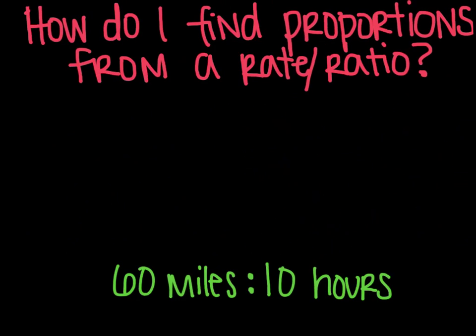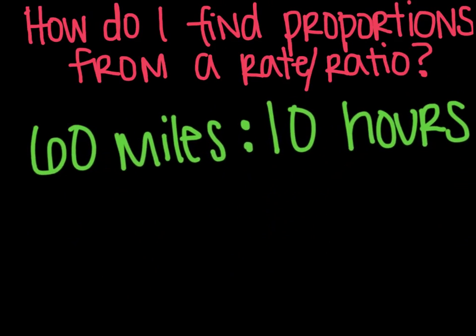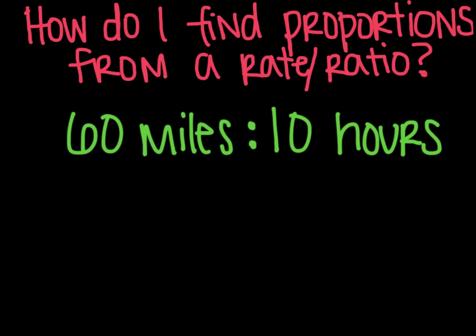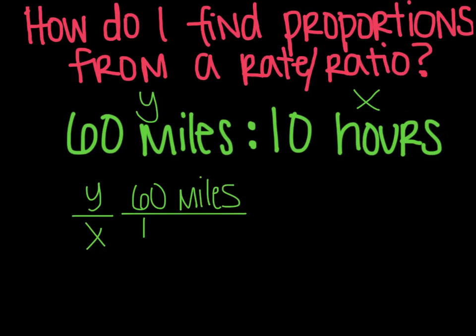The next question is, how can I find proportions from a rate or a ratio? Here's your example. You have 60 miles to 10 hours. And if you remember, our ratio that we're working with is y over x. So this is y and this is x. Because I can write a ratio using a colon, using a fraction, or using the word to. And in any of those ways, y always comes first. So my y over x ratio is going to be 60 miles over 10 hours.